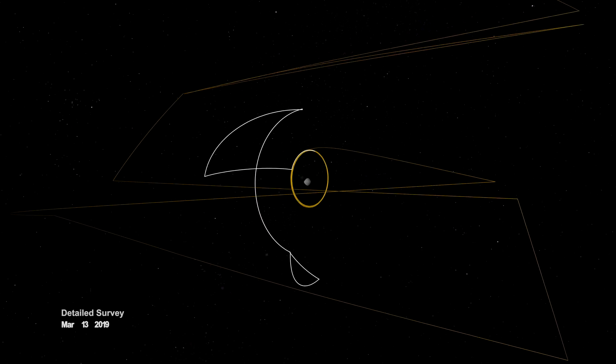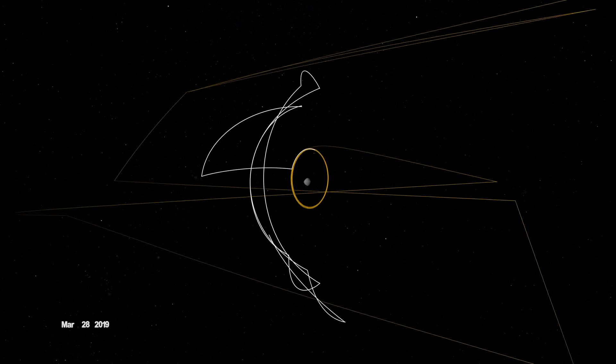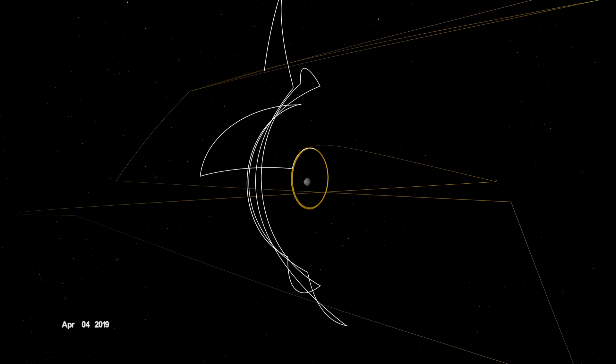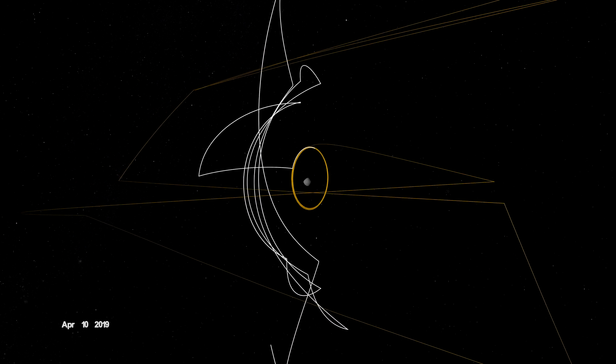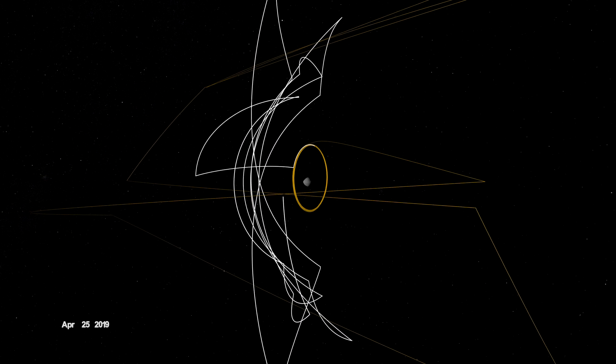In early 2019, it broke orbit to conduct a detailed survey. A series of sweeping passes allowed OSIRIS-REx to study geological features at different latitudes and times of day, enabling stereo imaging and landmark-based navigation.